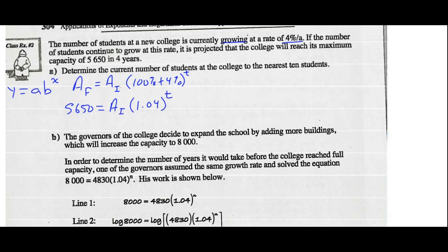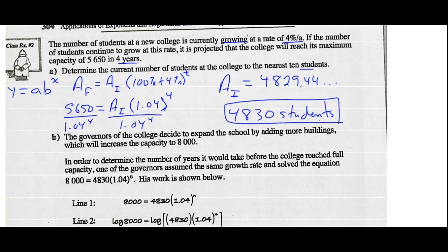Amount final is 5,650 students. We're not sure how many we started with. 100% plus 4% is 1.04 to the exponent t. We know what t is - we were told that t is four years. So we're going to divide both sides by 1.04 to the exponent 4. Initial amount of students equals 5,650 divided by 1.04 to the 4, which is 4,829.44 and so on. To the nearest 10 students, 4,830 students.